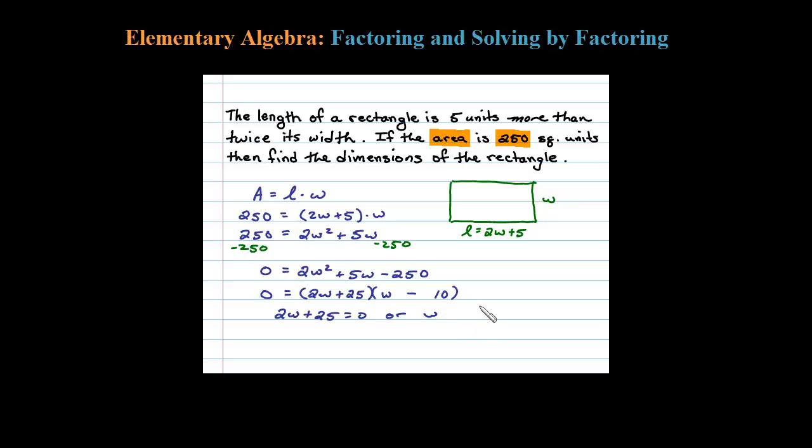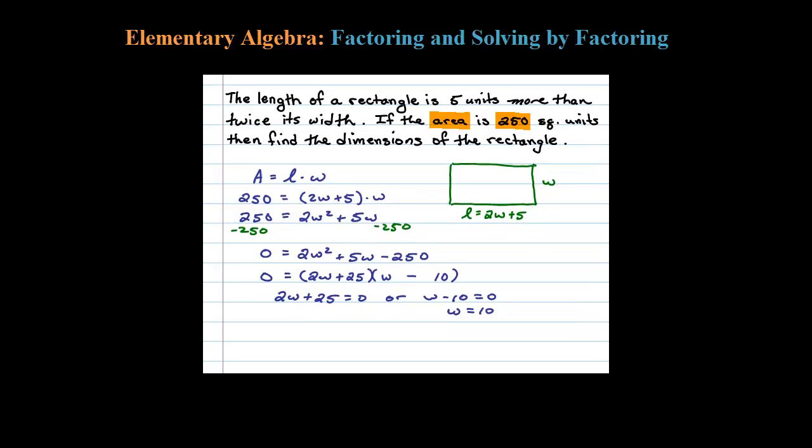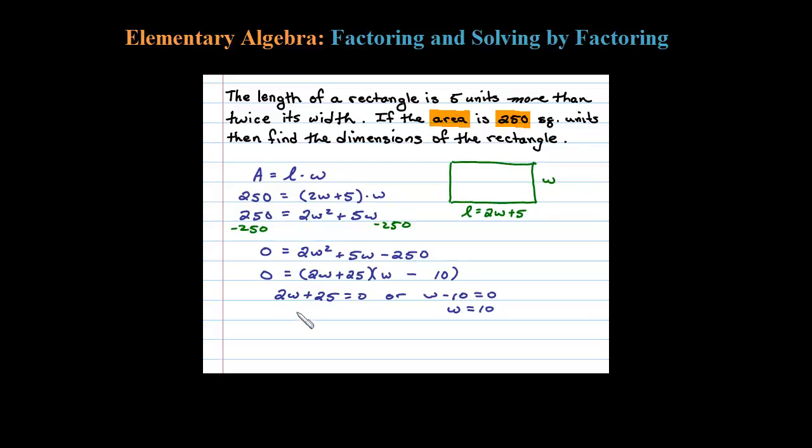Set each factor equal to 0 using the zero property. This tells me W equals 10 units. On this side we have 2W equals negative 25, so W equals negative 25 divided by 2.